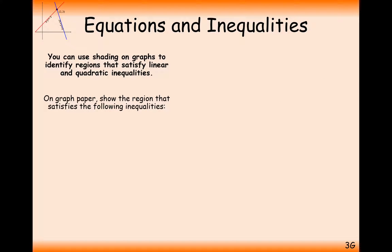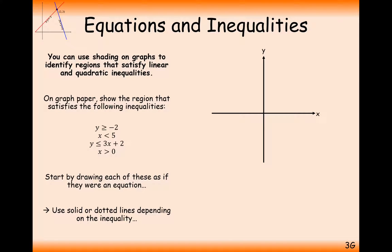That's a basic reminder of how we draw these graphs. The first thing to remember is that we need to draw the actual equations of the lines when there is an equals-to symbol. We draw them either dotted or solid based on the inequality given. If it has an equal-to symbol, it's a solid line. If it's a strict inequality, it's a dotted line.